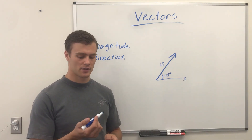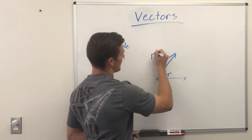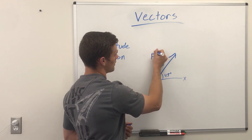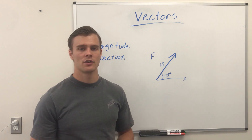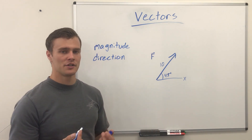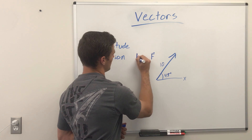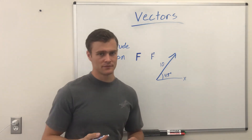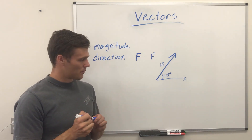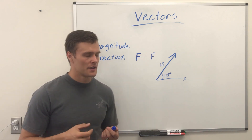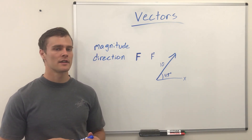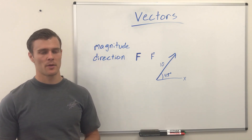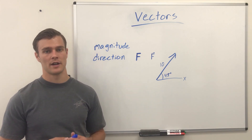We can call this vector F — the way you label vectors is you put an arrow over the top of the variable when handwritten, and in your book you might see it being bolded. Another term you need to know is a scalar. A scalar is like a vector, but it only has a magnitude. You'll do math on vectors and come up with scalar values, which just means that it doesn't have a direction.